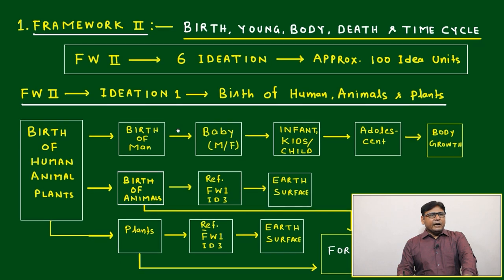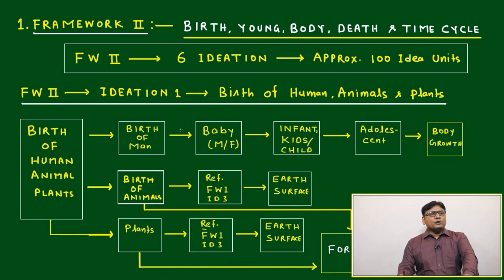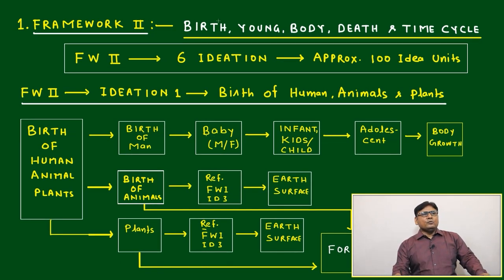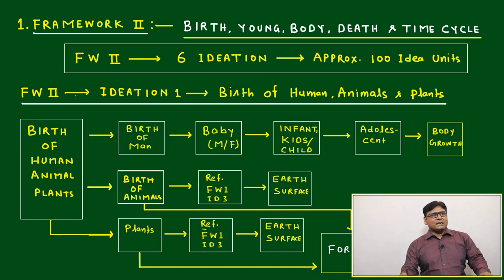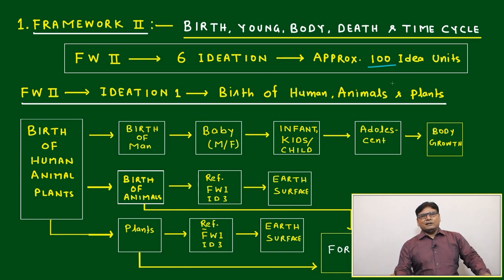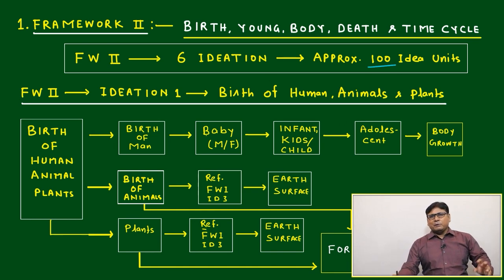This is our complete layout which we are going to discuss today. This is your framework covering birth, young, body, death and time cycle — total six ideas and approximately one hundred idea units, plus or minus.